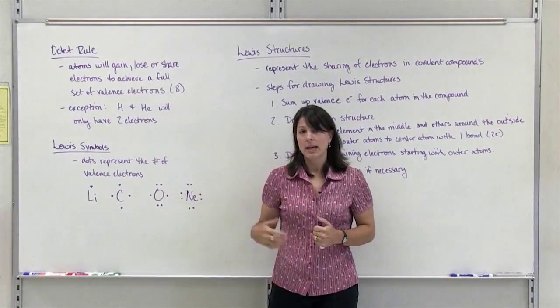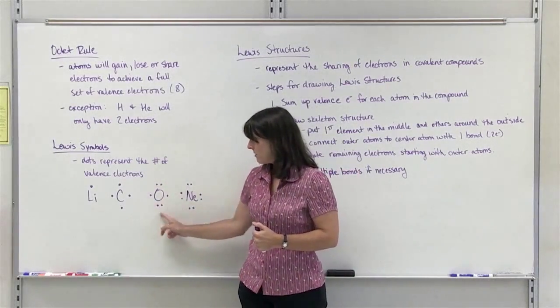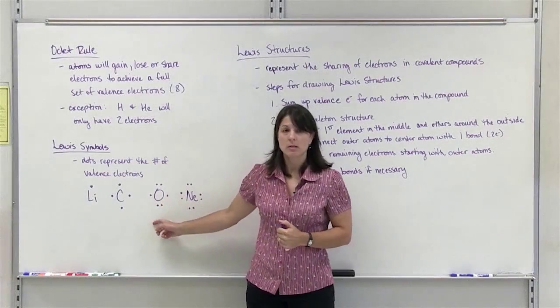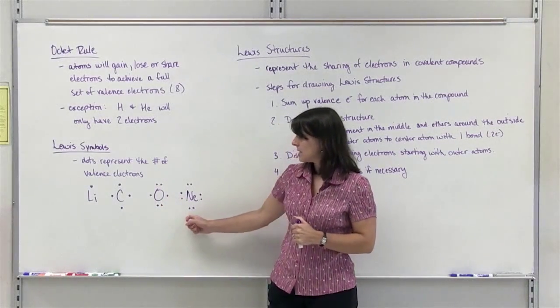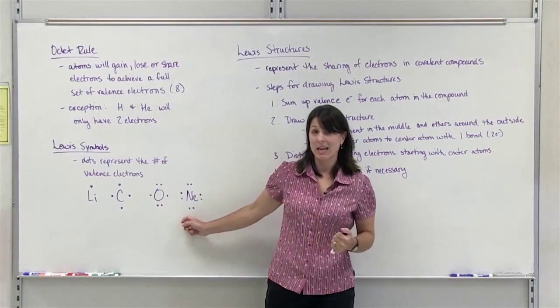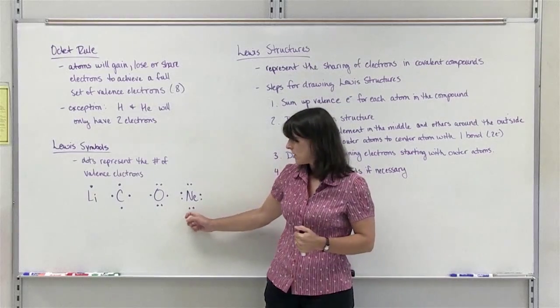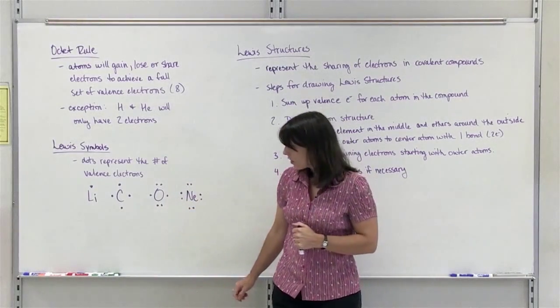Oxygen in group 6A has 6 valence electrons, so we have 6 dots around the symbol for oxygen. And neon is a noble gas — it has 8 valence electrons, so we have 8 dots around it.